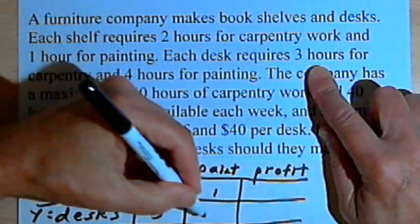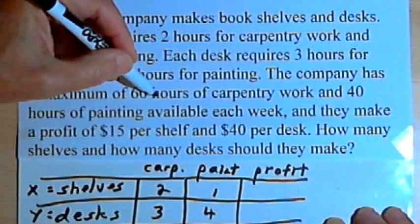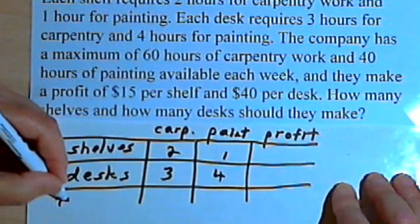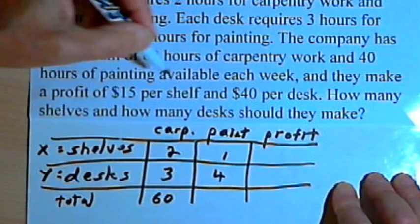And each desk requires three hours of carpentry work and four hours for painting. The company has a maximum of 60 hours for carpentry work. So the total amount that they can have for carpentry is 60 hours.